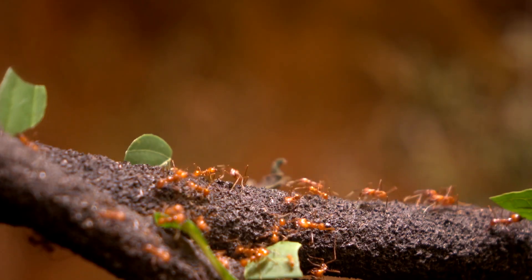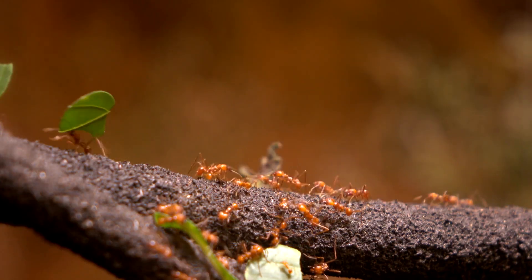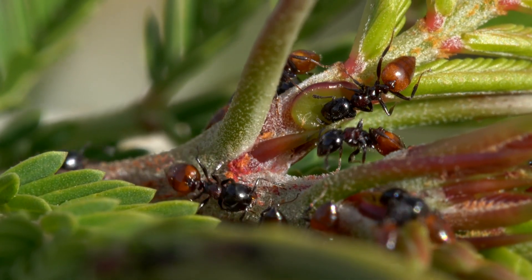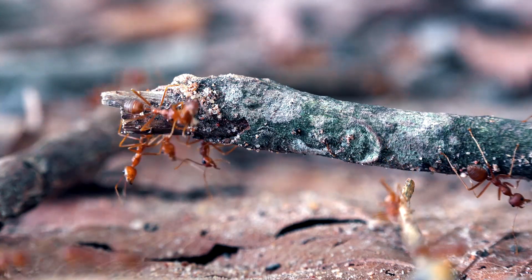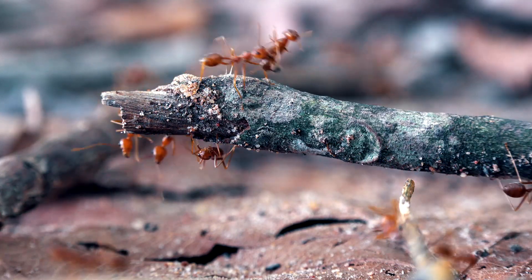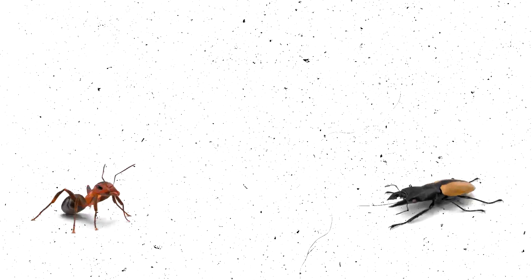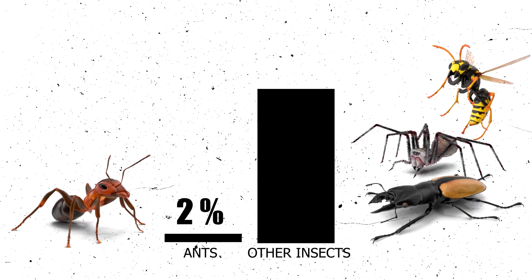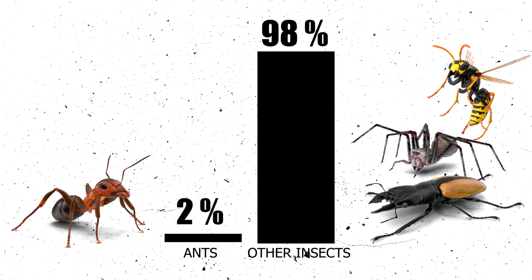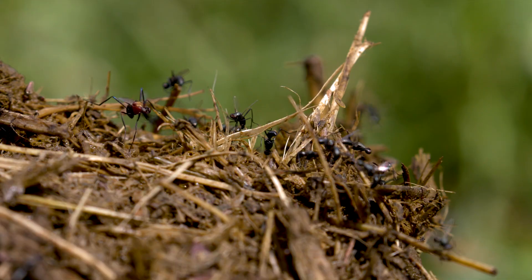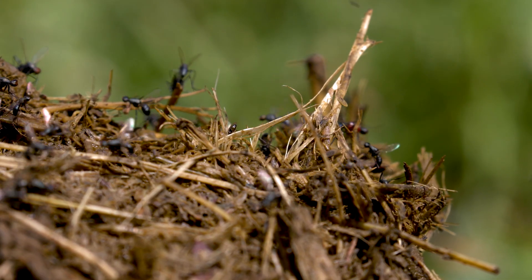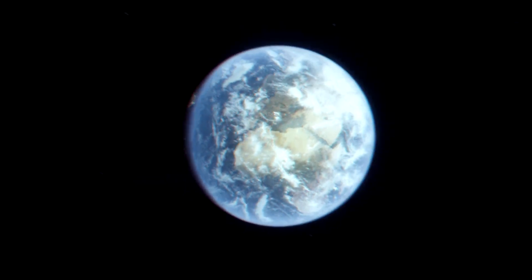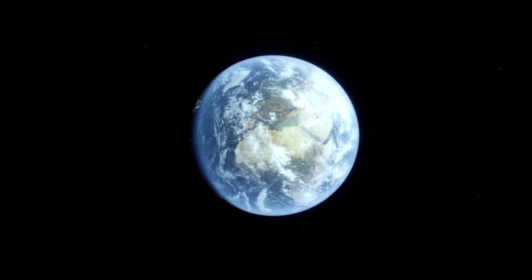Ants are ever-present organisms commonly found throughout tropical forests worldwide. They make colonies that range from a few individuals up to millions. And although they make up roughly 2% of nearly a million species of insects described, ants are estimated to comprise four times the biomass of all vertebrates on Earth combined.